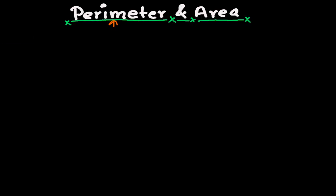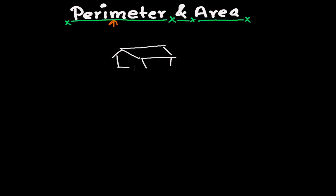To understand Perimeter properly, let me make a small house. Suppose this is a small house — I'm just trying to make it look like a house. This is the gate, the door, and these are the small windows. This is the roof. Suppose this is a small house and this is the way to go outside.